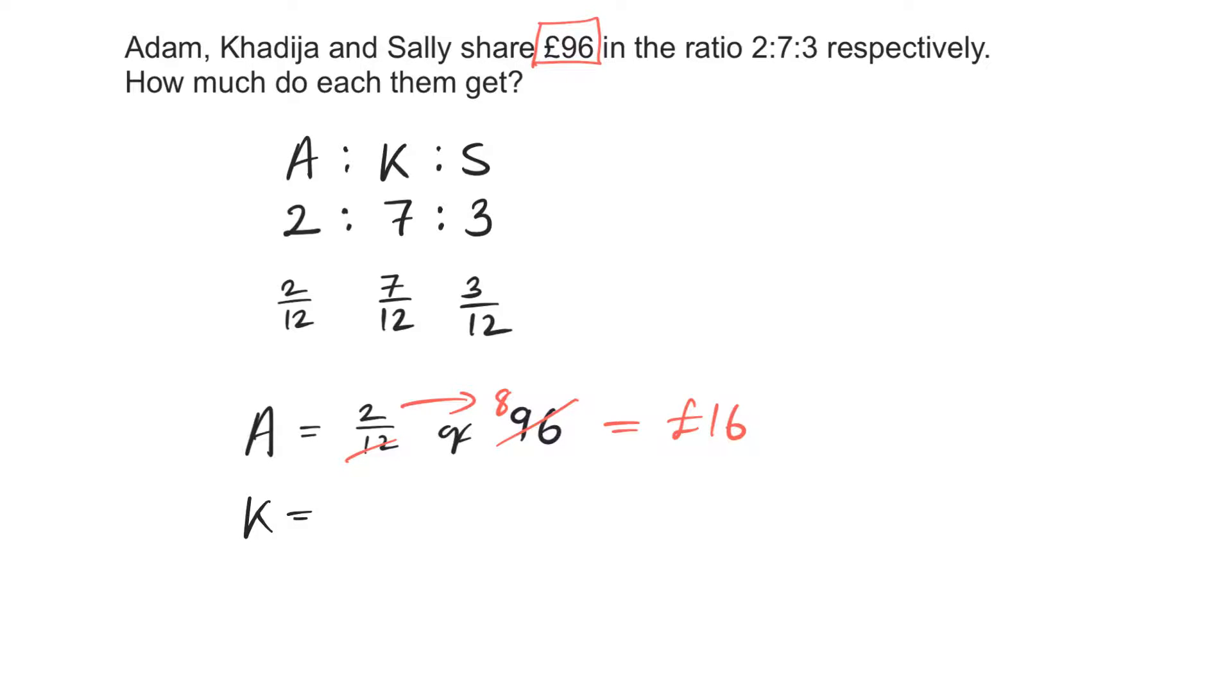And Khadija will get 7 twelves off the 96 pound which is 96 divided by 12 is 8. 7 times 8 is 56 pound. And Sally will get 3 twelves off the 96 pound. 96 divided by 12 is 8. 3 times 8 is 24 pound.